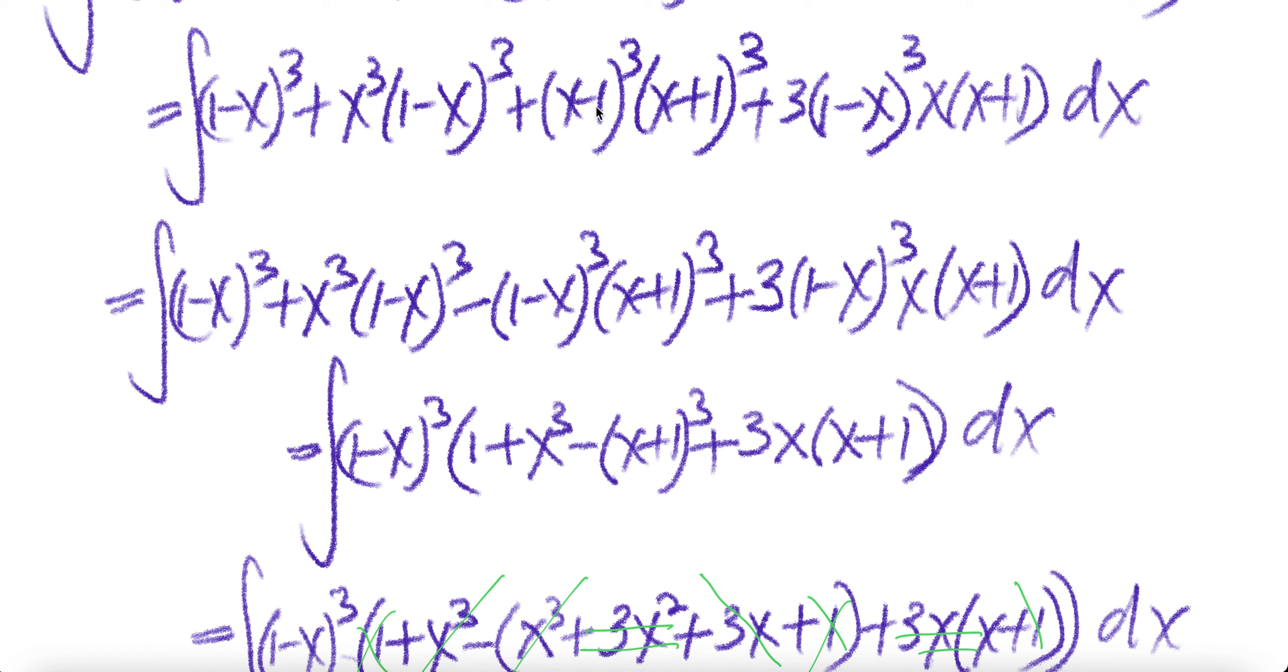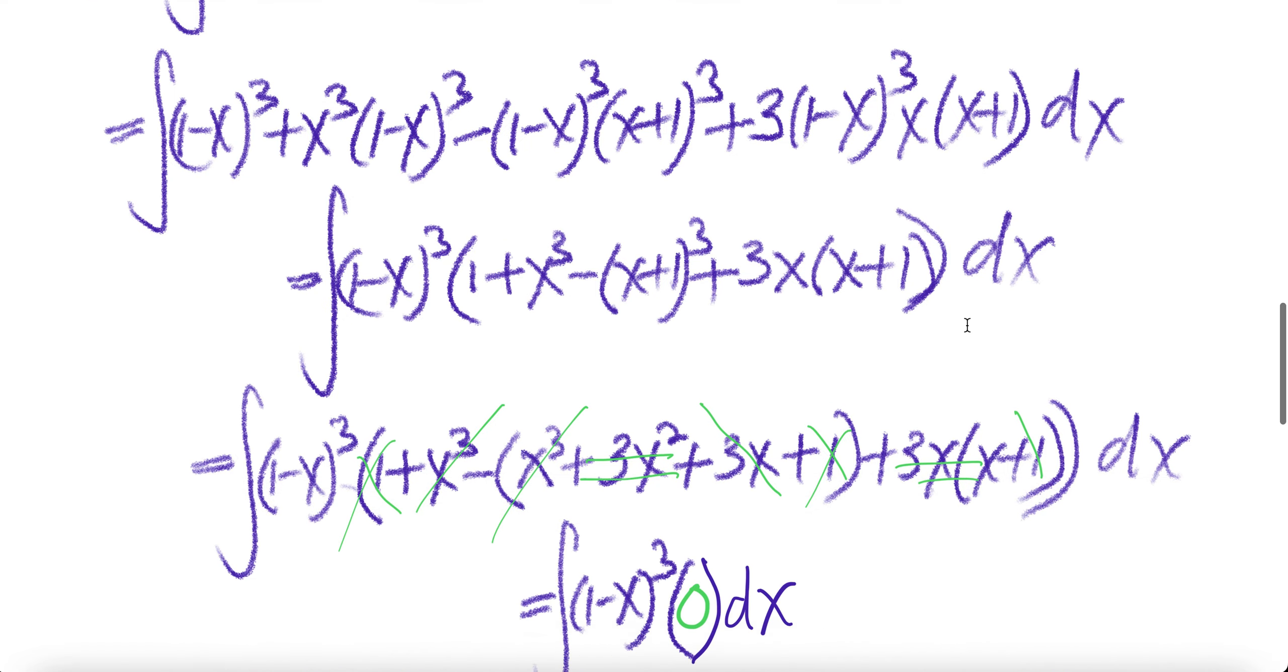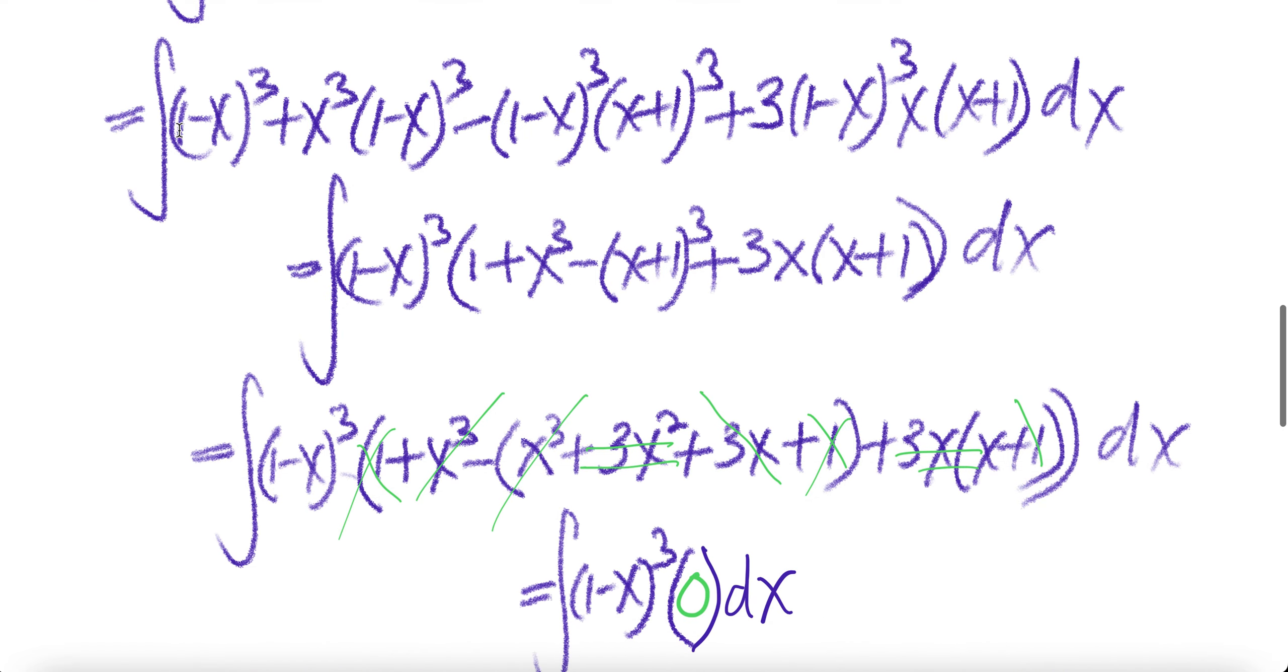Factor out the -1. You get (-1)³ which is -1, and then here will be (1-x)³ times that. Now factor out the (1-x) because everywhere you have (1-x)³. Here you get 1 + x³ - x, or (1-x)³ + 3x(x+1).